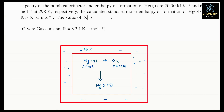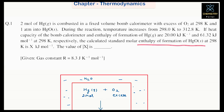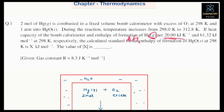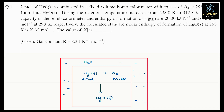After this, the question gives the heat capacity of the calorimeter and asks us to calculate the molar enthalpy of formation of HgO solid. The enthalpy of formation of mercury gas is given as 61.32 kilojoule per mole.